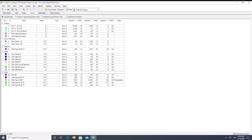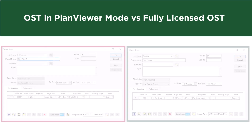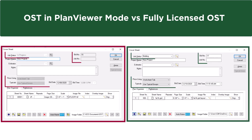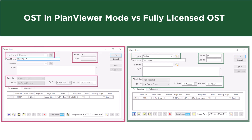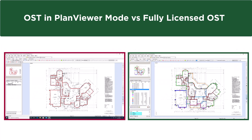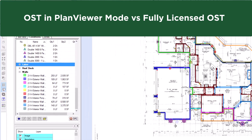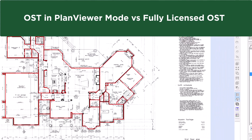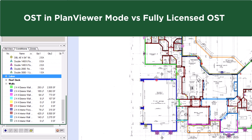What are the advantages of a fully licensed version of on-screen takeoff versus Plan Viewer Mode? A full license of on-screen takeoff allows you to add more detail to a bid, such as job statuses and bid areas. A full license also allows you to create conditions to take off a wide variety of items on a set of plans, not just one-at-a-time measurements. These conditions can be saved and reused on additional bids, so there's no need to recreate commonly taken off items repeatedly.